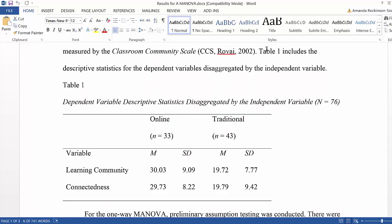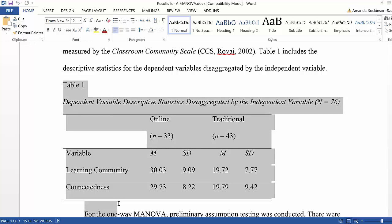I really like to report descriptive statistics in tabular format. So I've stated that table one includes the descriptive statistics for the dependent variables disaggregated by the independent variables. And I've put in an APA formatted, because I'm using APA format, an APA formatted descriptive statistics table.